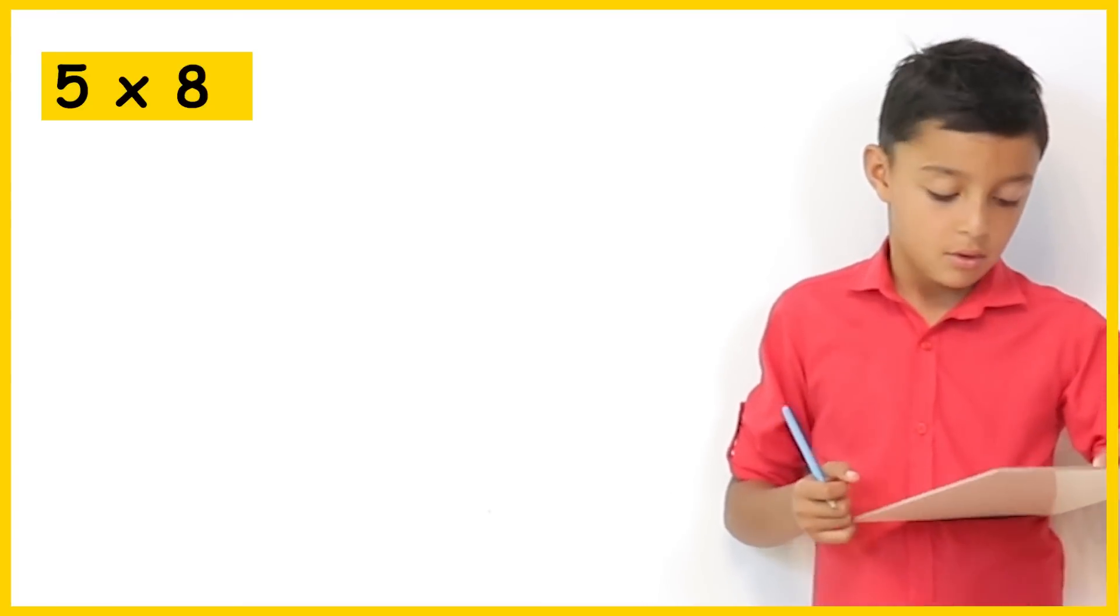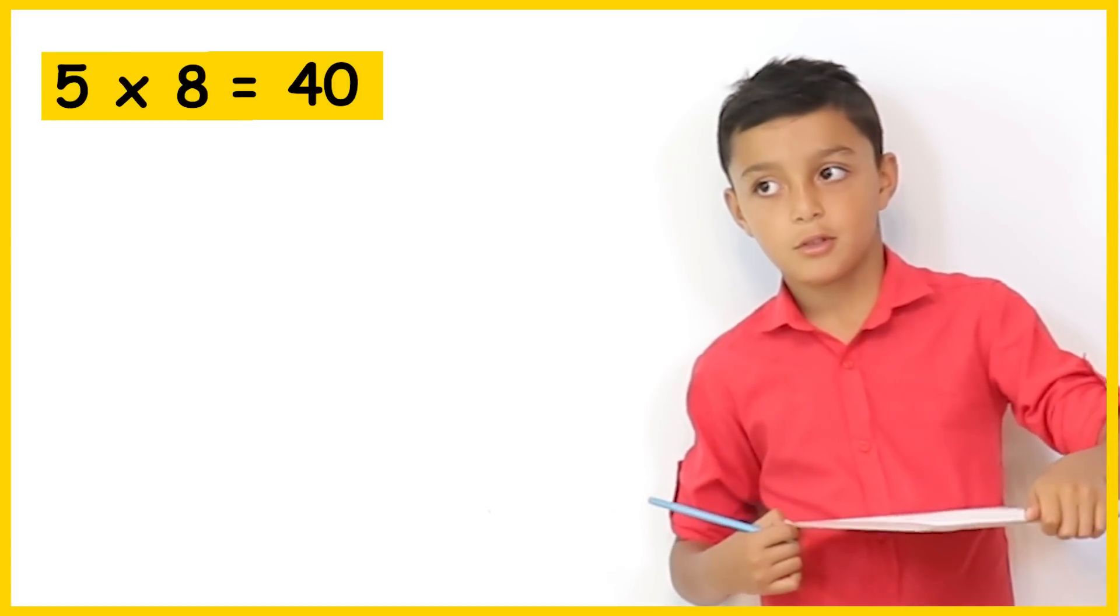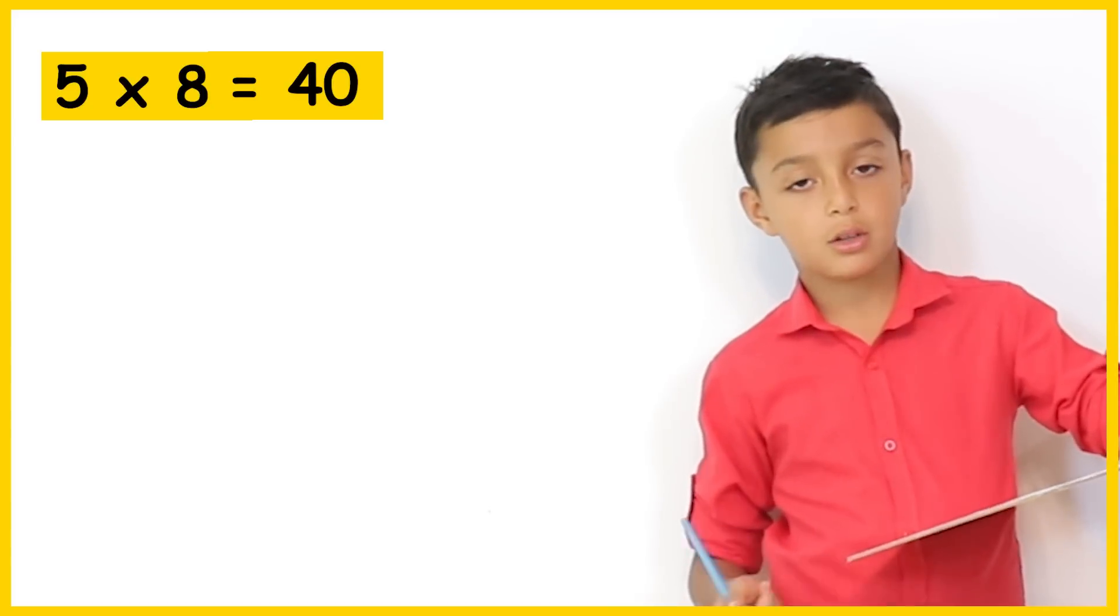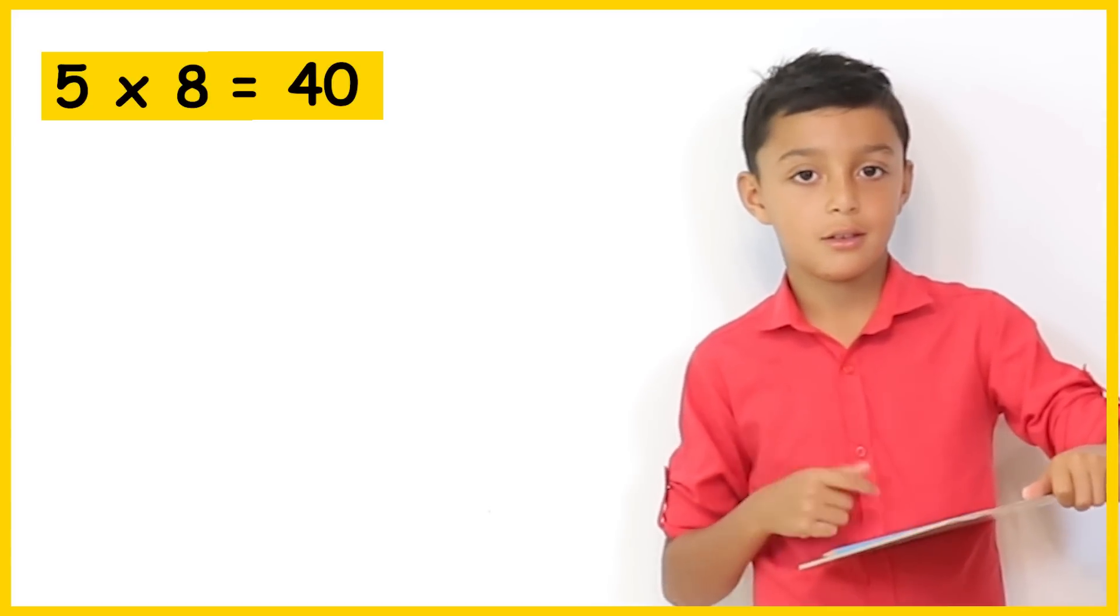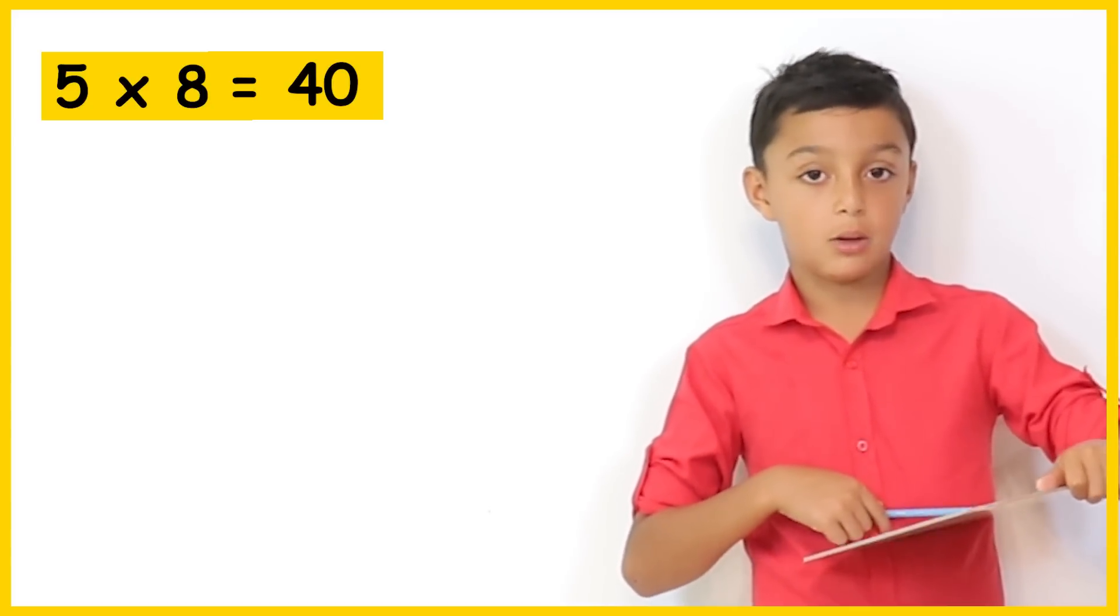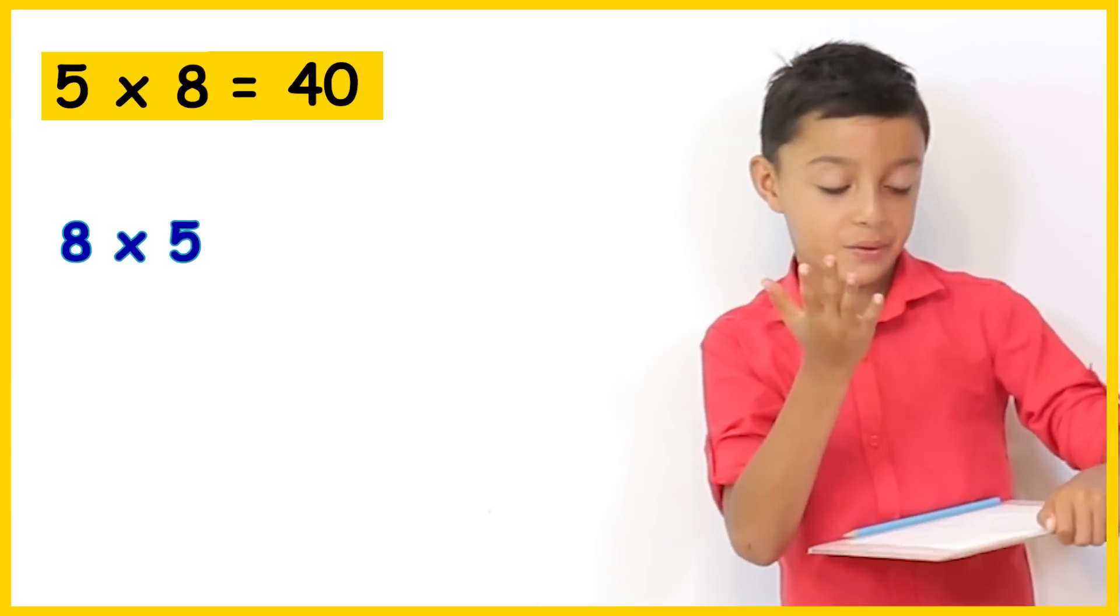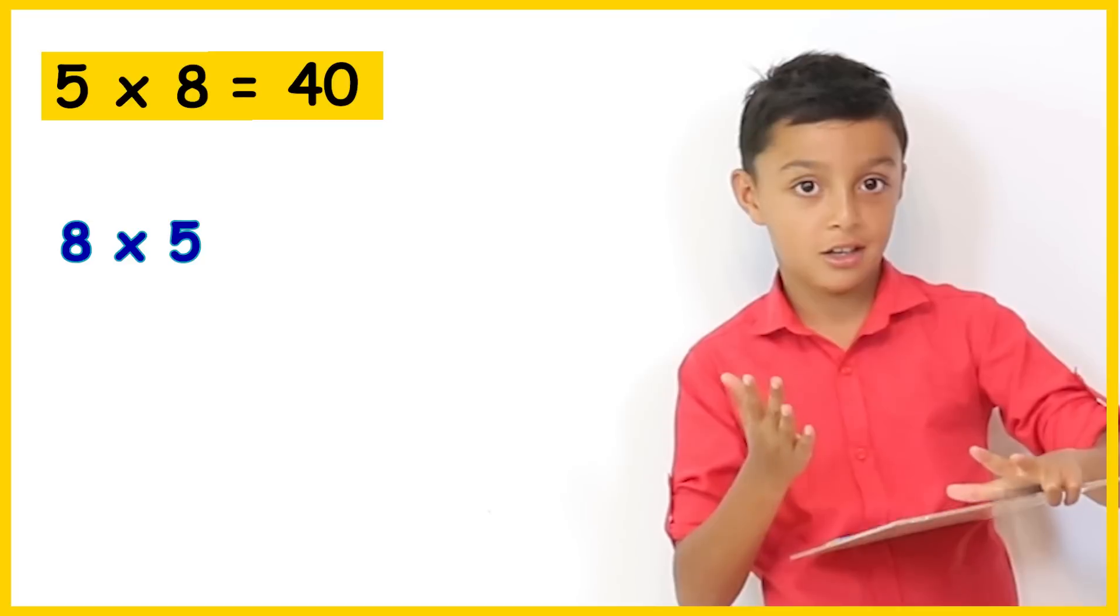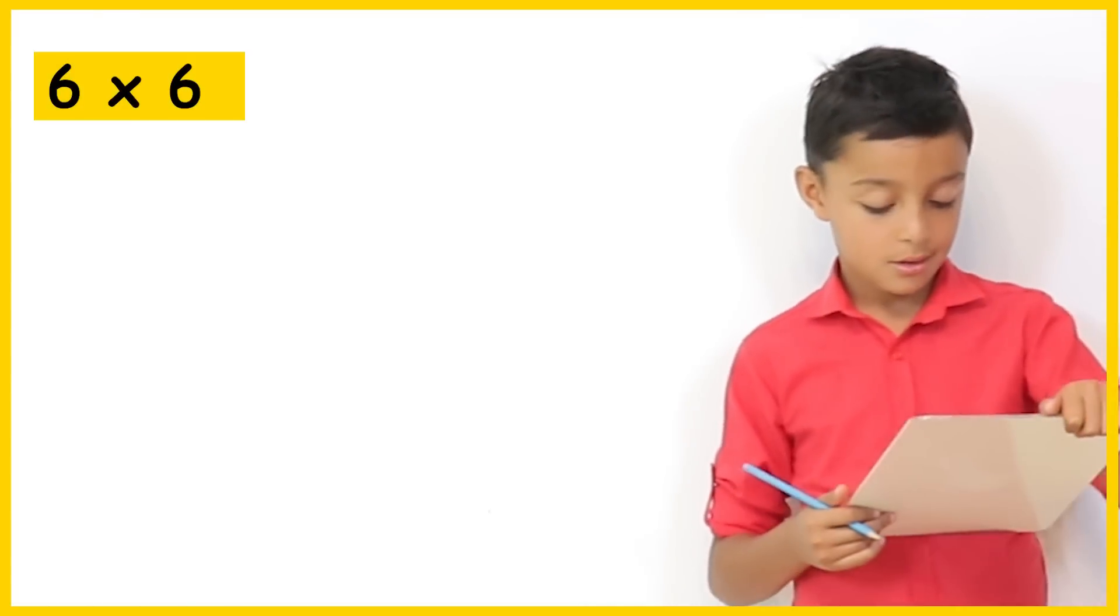5 times 8. 5 times 8 is 40. Well, we can switch it around and then... When you switch it around what would it be? It would be 8 times 5. Then we go 5, 10, 15, 20, 25, 30, 35, 40. Brilliant. So you were counting up in 5's for that one.